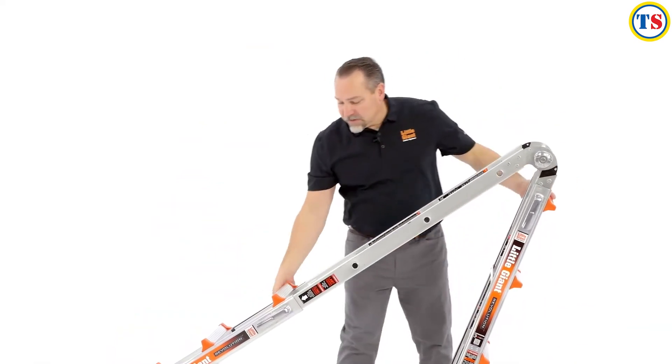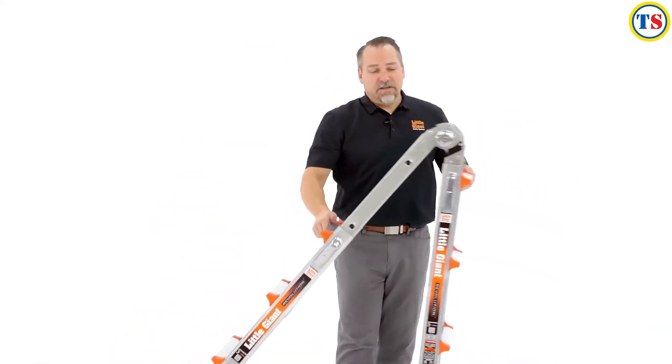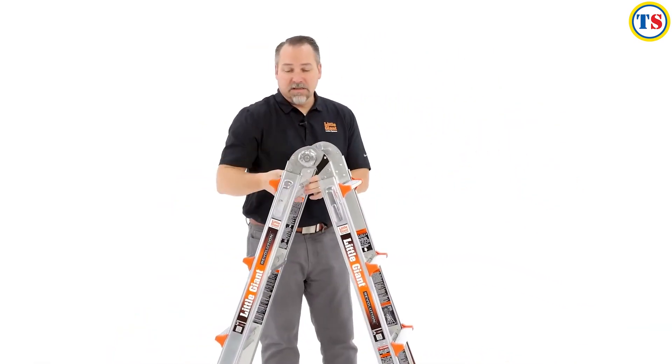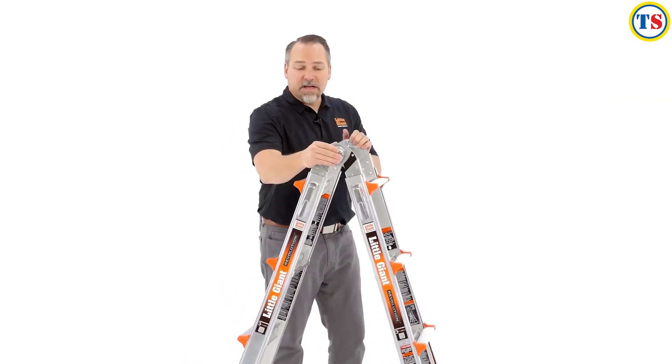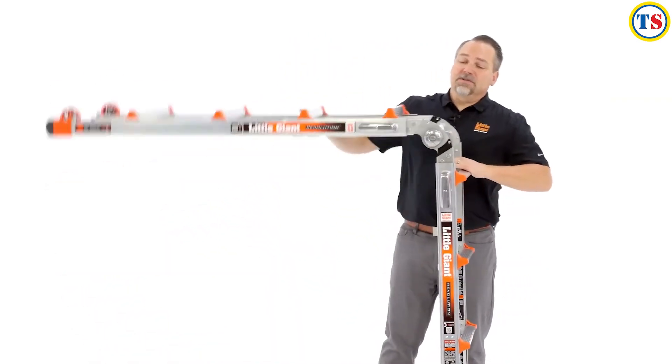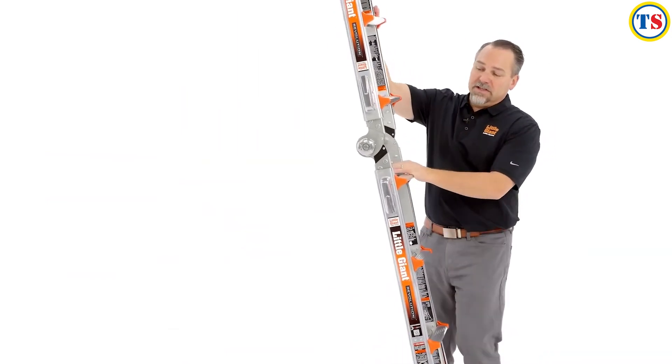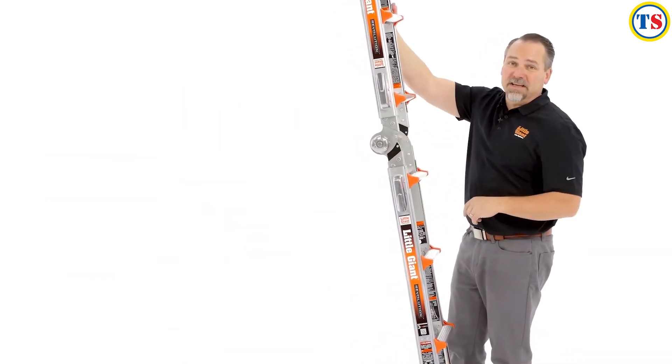To make it into an extension ladder, we'll bring it down to its stored position, unlock the hinge one more time, and turn it into the extension ladder. Of course, always make sure that the hinge is fully seated.